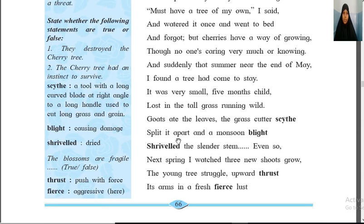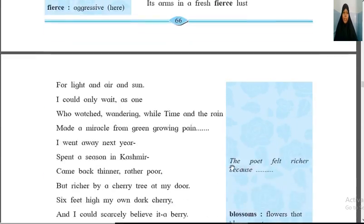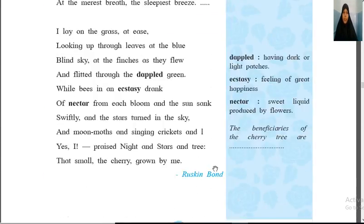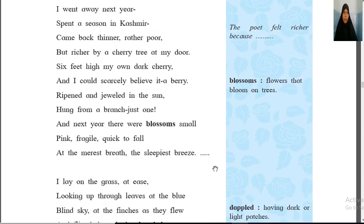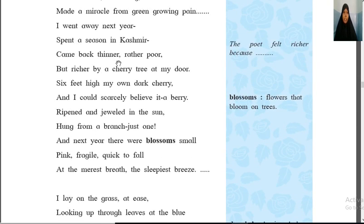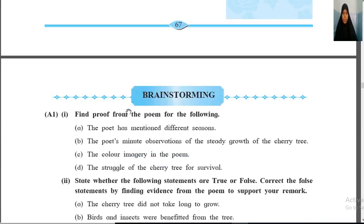Then here: 'next spring, I watched three new shoots grow.' Again he sees that the new shoots had grown there. So from this you can say he was very minutely observing the cherry tree. One more example: when he returns back from Kashmir, he saw the cherry tree and a berry was there on it. That line you can also mention.